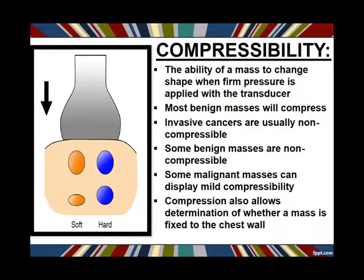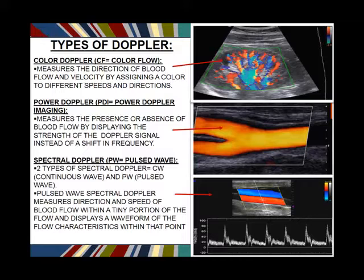If something is compressible or a soft mass, it's usually going to be benign. Where something hard and non-compressible is usually going to be malignant. We also look at Doppler. Color Doppler shows us the direction of blood flow and velocity, assigning different colors to different speeds and directions. Power Doppler gives us only the presence or absence of blood flow, measuring the strength of the Doppler signal instead of the shift in frequency. Spectral Doppler lets us take a sample gate and interrogate one tiny piece of a vessel, giving us a waveform so we know the characteristics of that vessel.